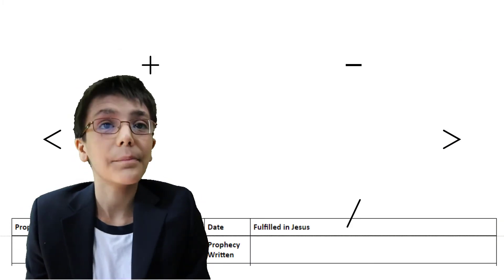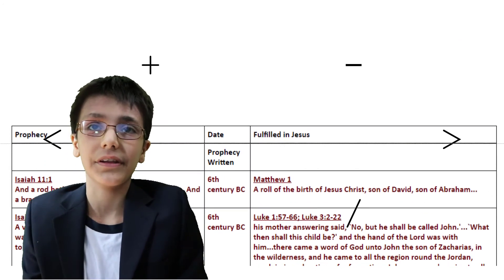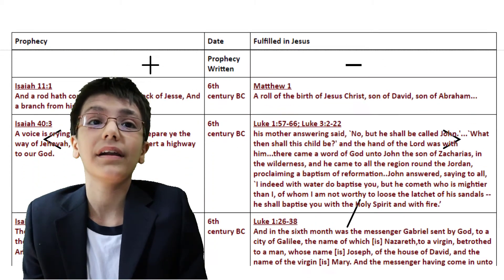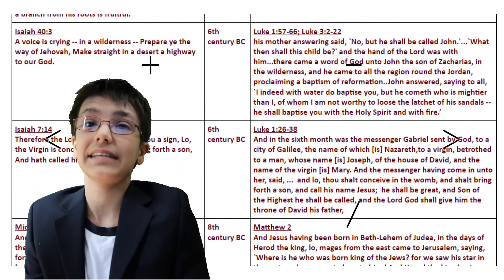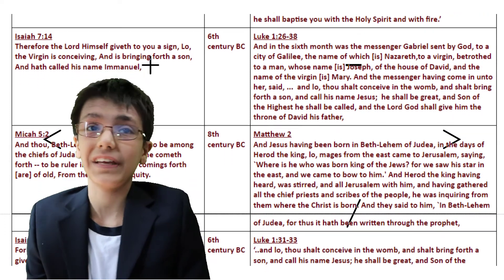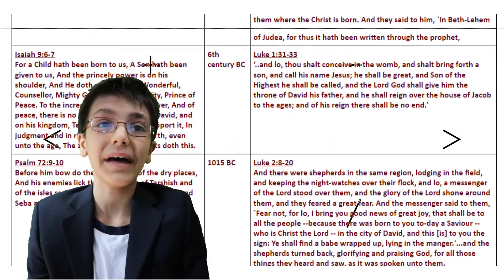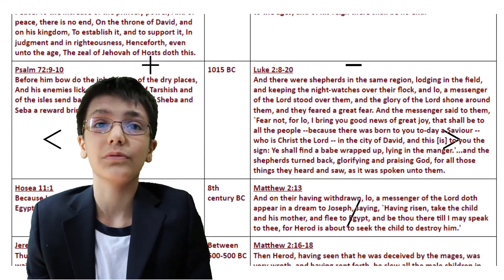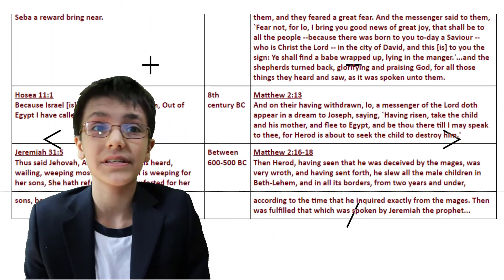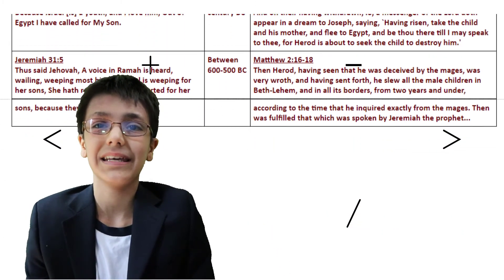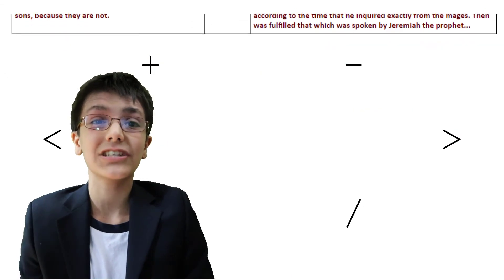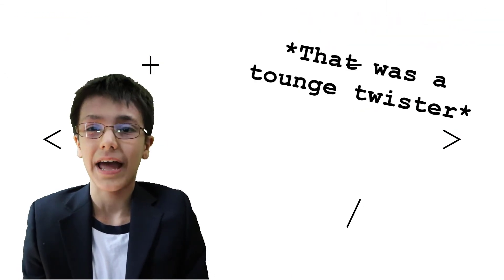For example, look at these eight prophecies concerning Jesus' birth and early life that talk about his predecessor, John the Baptist, his ancestral lineage from the family line of King David, son of Jesse, to his place and birth in Bethlehem, his birth to a virgin, his visit from shepherds, his parents escaping to Egypt when he was a baby, and Herod killing children to try to get rid of him as a child.